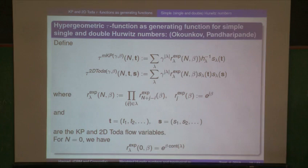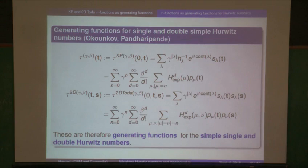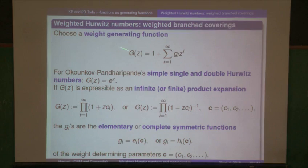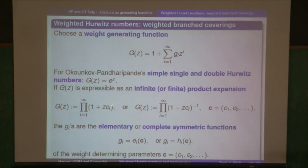This whole talk is about generalizing this by giving a more democratic treatment. We introduce a function that replaces the exponential function of the previous slide. This could be a formal series — it'll be something that starts with one, and then has either a convergent or not-convergent entire series. If this is not an infinite sum but an infinite product, then you can recognize the coefficients as being the elementary symmetric functions in the coefficients of this product.